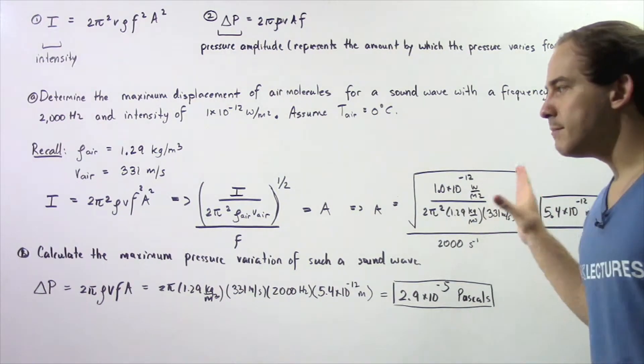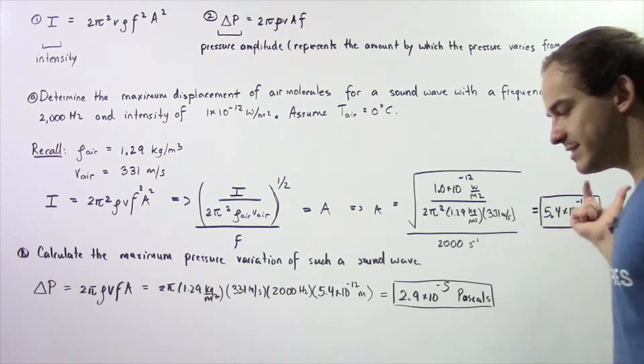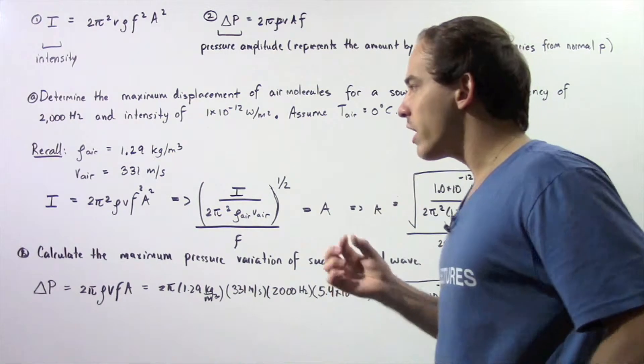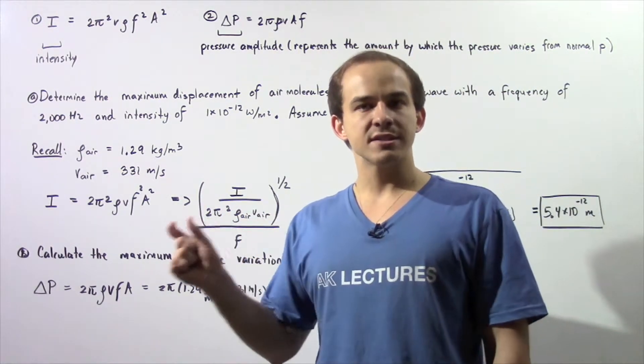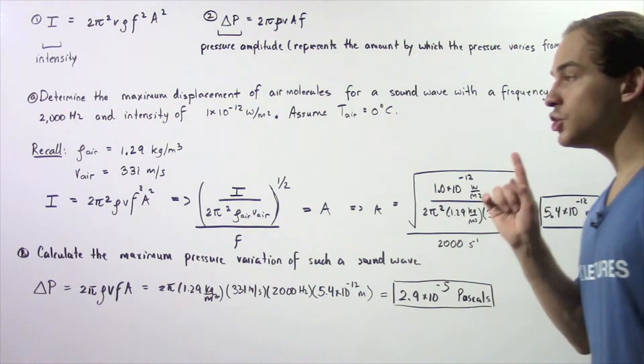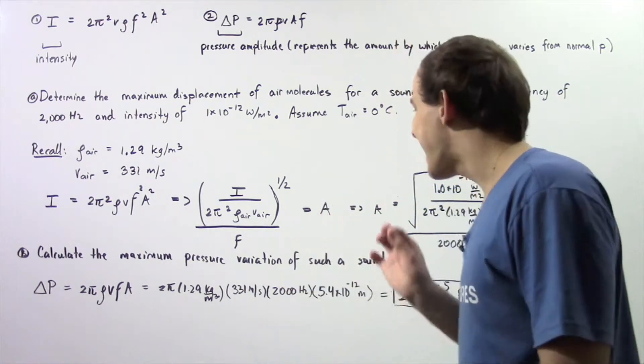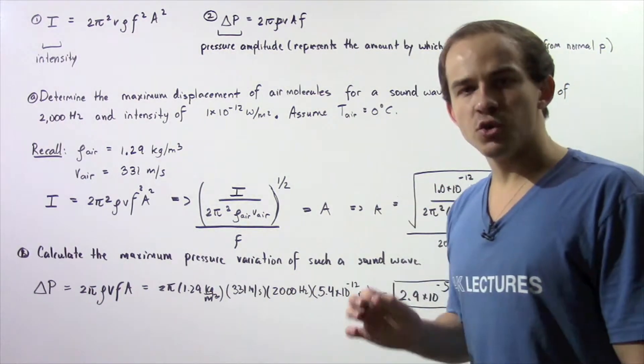What exactly is the meaning of this amplitude? This basically tells us the distance that our air molecules oscillate, the maximum displacement of the oscillation of our air molecules. It turns out that the human ear is capable of detecting oscillations that have a value of 5.4×10⁻¹² meters. This is an extremely small value.